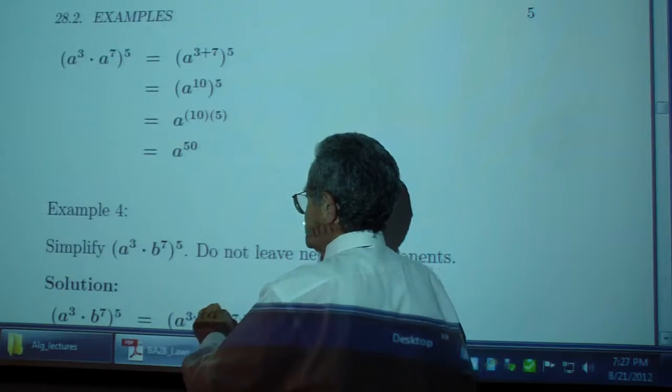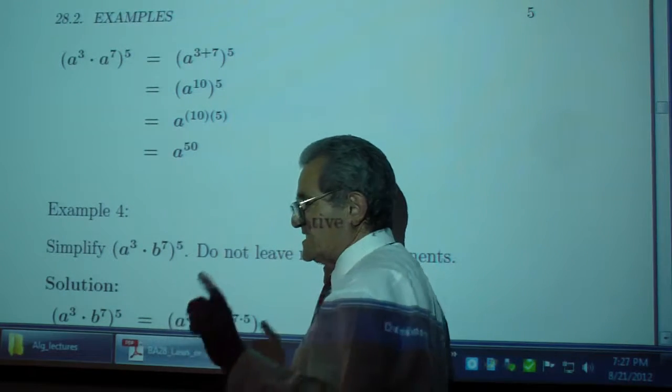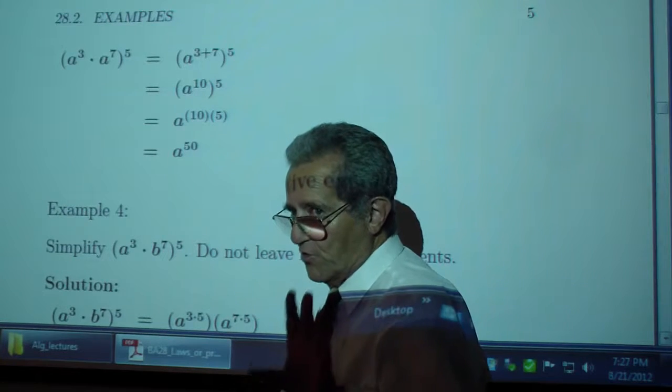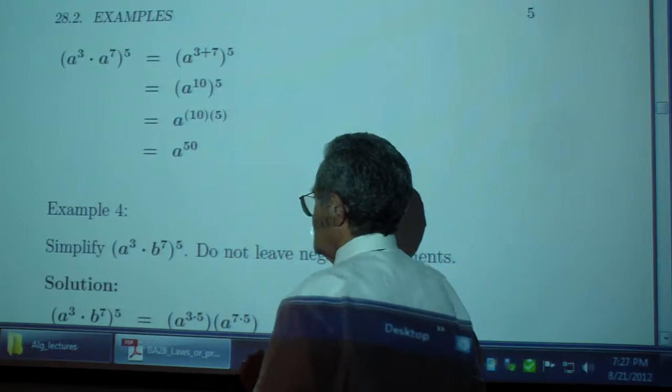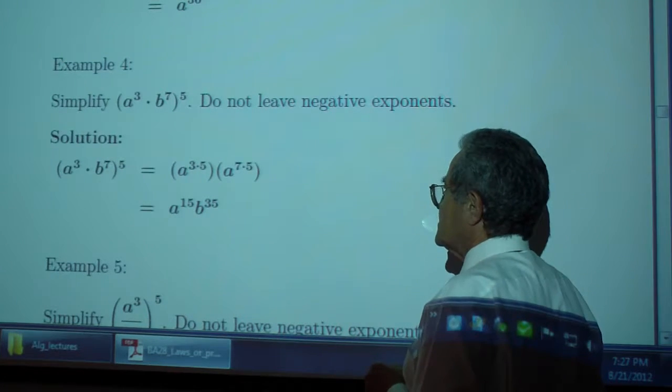8 cubed times 8 to the 7th. Multiply the outside by the inside exponent as long as you have multiplication, not addition or subtraction, I'm warning you. So you got 8 to the 15th and b to the 20th, b to the 35th.